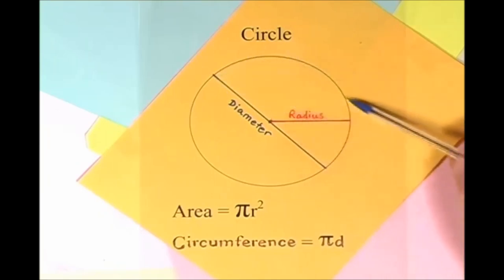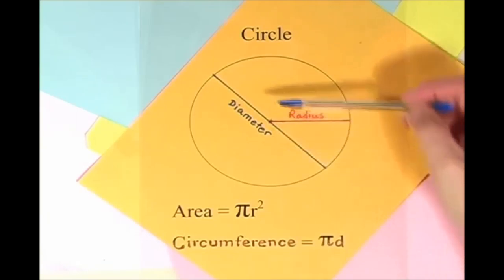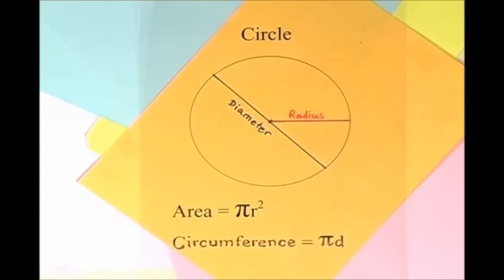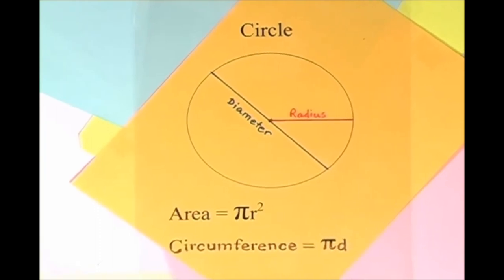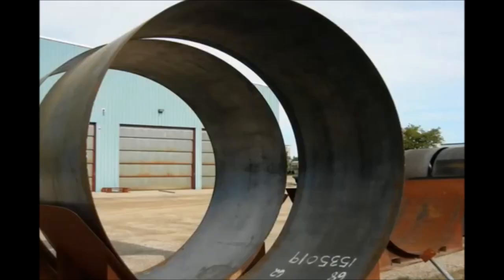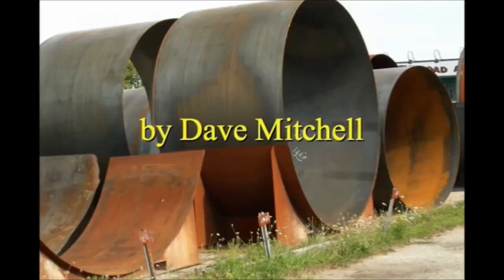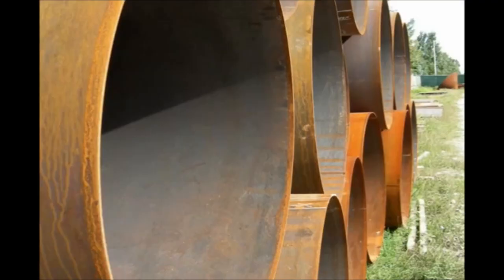Here is a circle, it knows how to get around. It has a radius from center to rim. And its diameter's a line that goes from side to side while passing through the center, now isn't that simple. Pi r squared sounds like area to me, when I need a circumference, I'll just use pi d. Pi r squared sounds like area to me. Here is a circle, it knows how to get around.